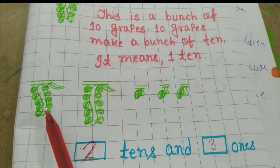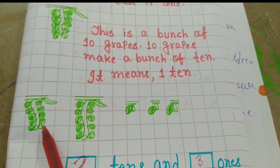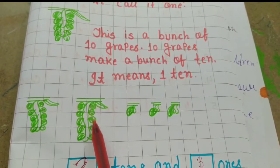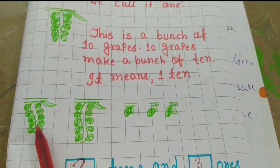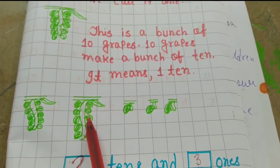Here you can see I have drawn 1 bunch of graph. And here also 1 bunch of graph. Means here 10 graphs. And here also 10 graphs.